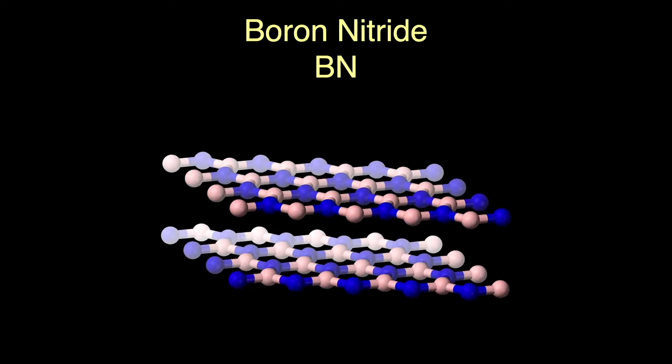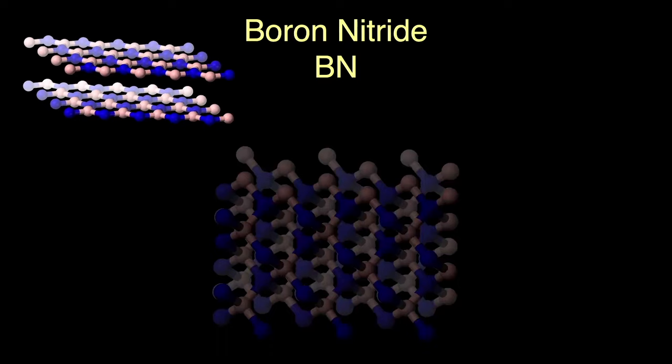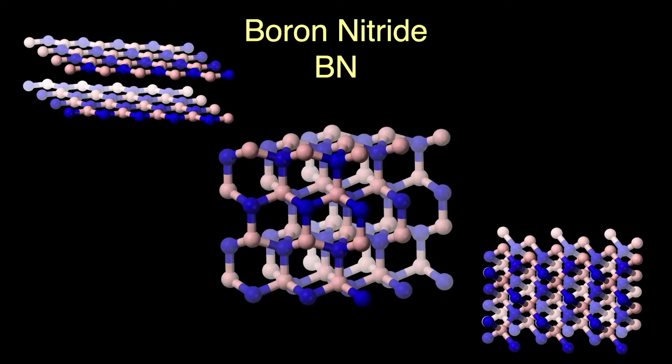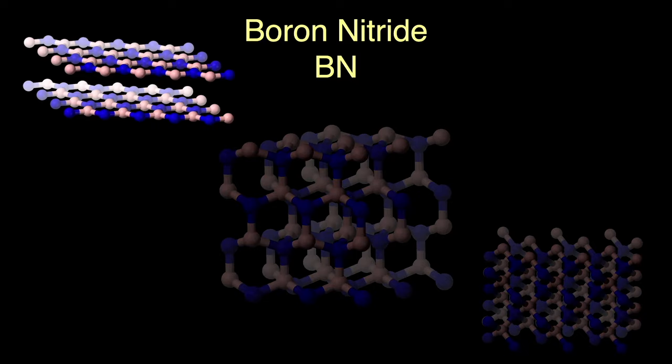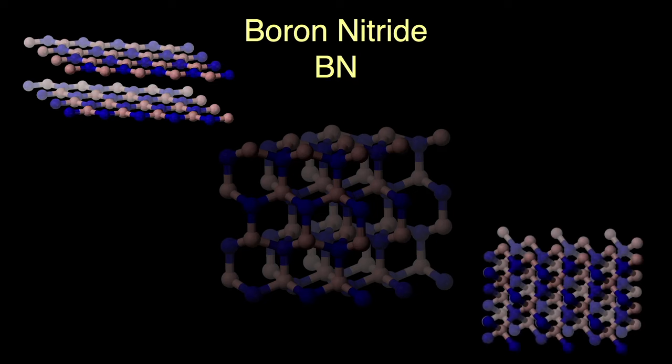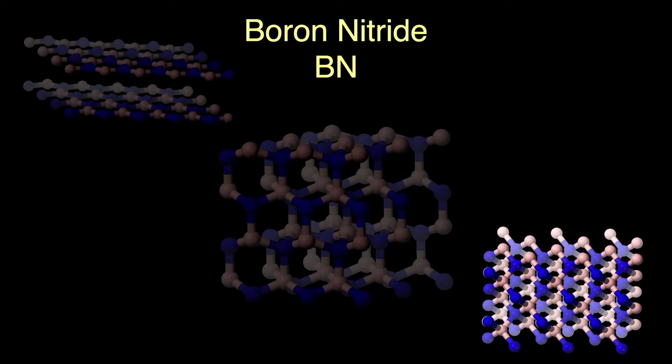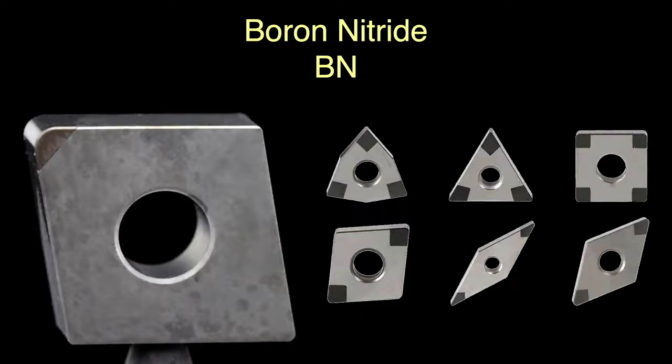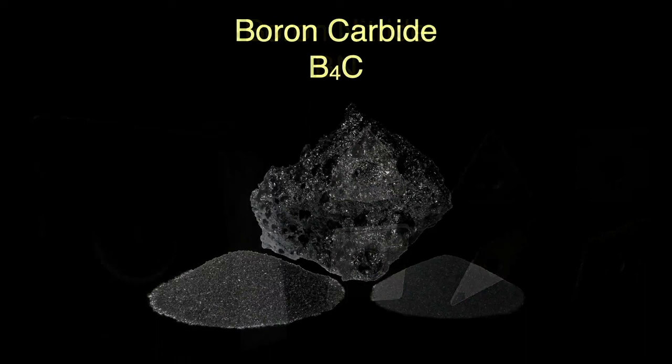Boron nitride is an interesting molecule with several molecular allotropes. It can form flat sheets with atoms arranged in hexagons similar to graphite, or arrange its atoms in a cubic form much like diamond, or even a more three-dimensional hexagonal structure. Each has different physical properties even though they all have the same chemical formula. Hexagonal boron nitride is useful as a high-temperature lubricant where carbon graphite would burn up. Cubic boron nitride is very hard and useful as an abrasive — completely opposite uses.